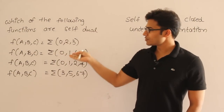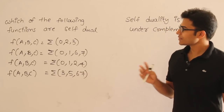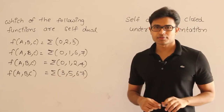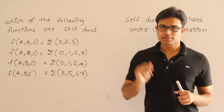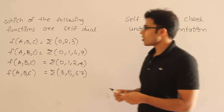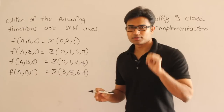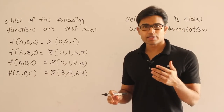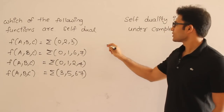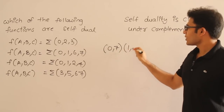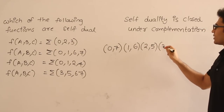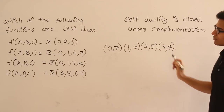The question asks which of the following are self-dual functions. Whenever such a question is given, it is better to identify what the minterms are and what the mutually exclusive terms are. All options are about variables A, B, C, which means three variables. With three variables, how many minterms are possible? Eight minterms — 0 to 7. Among these eight, the mutually exclusive groups are: {0,7}, {1,6}, {2,5}, and {3,4}.